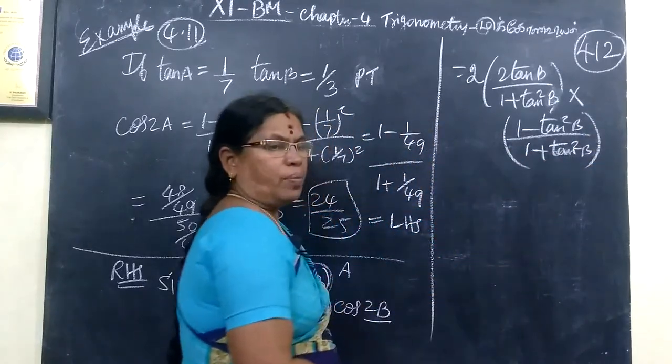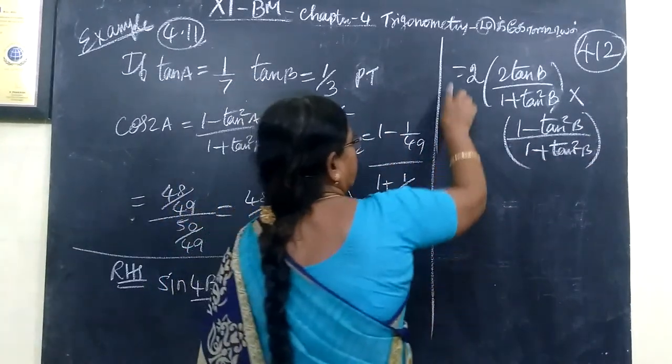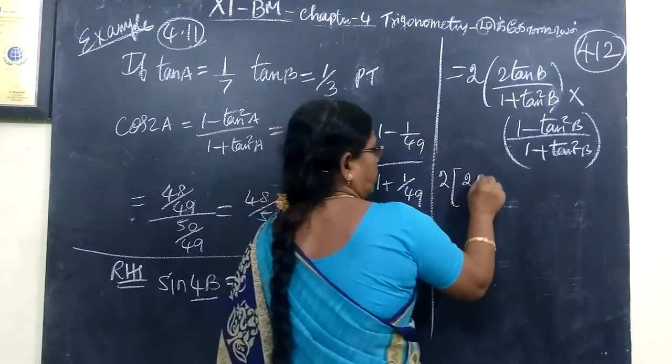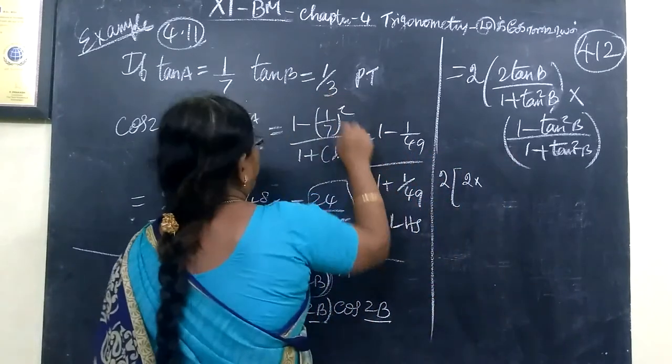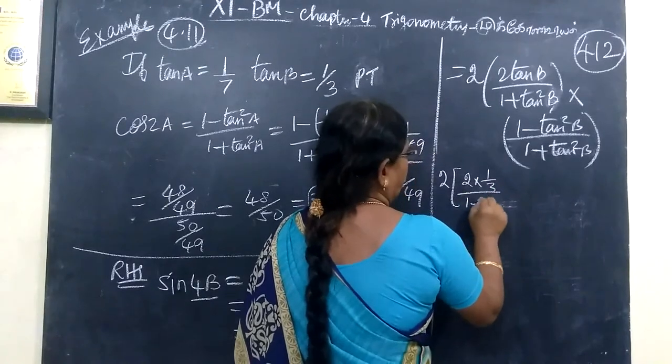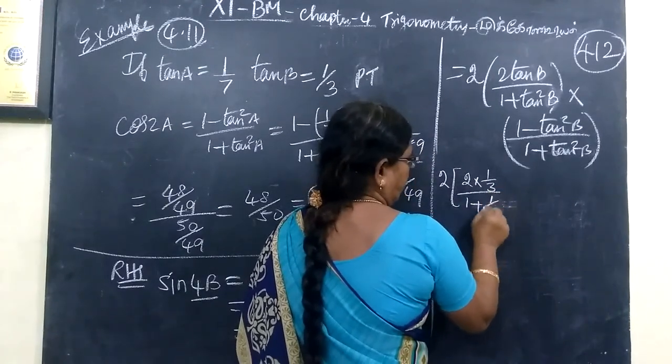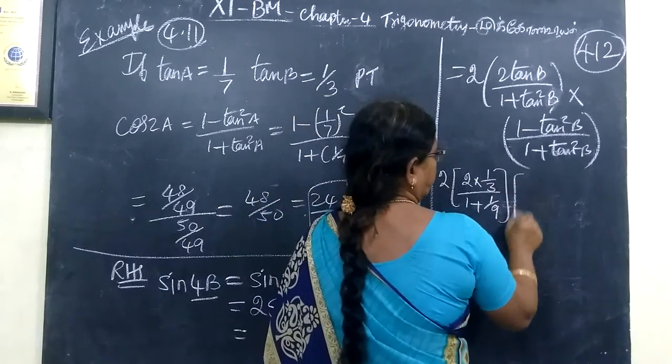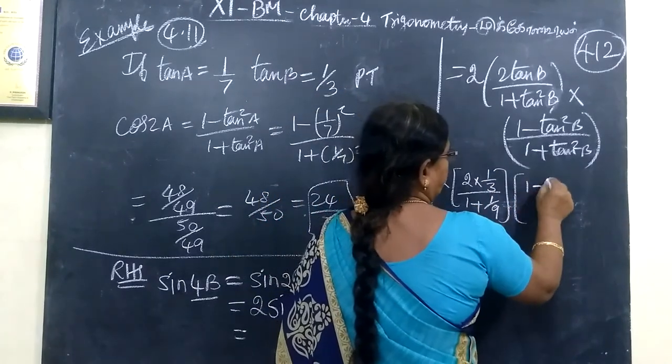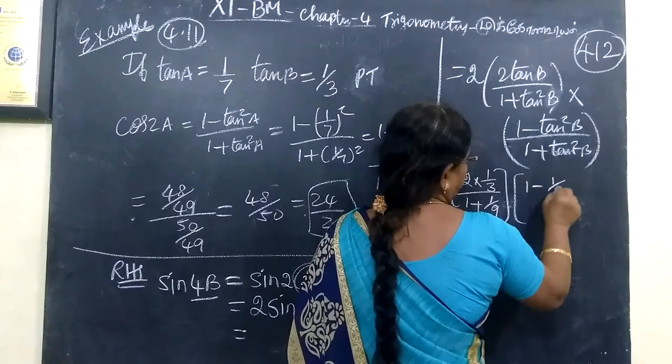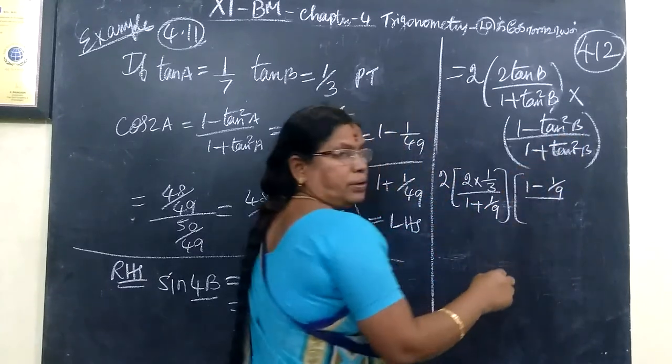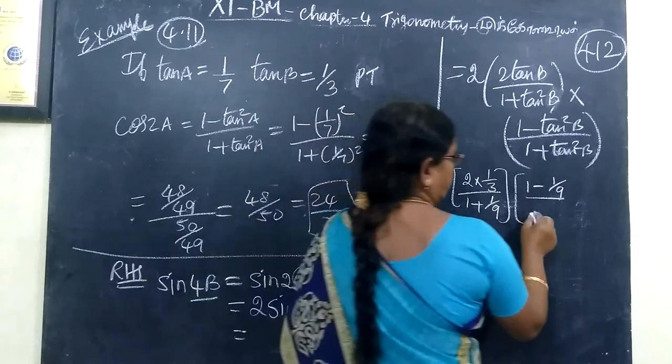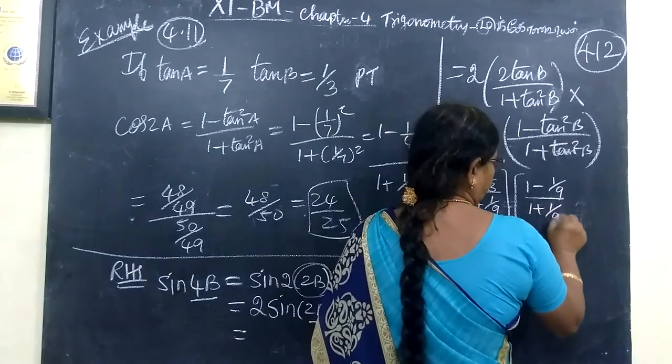Now, using the formula, we are writing this. 2 into 2 tan b. Tan b is 1 by 3, by 1 plus tan square b, that's 1 by 9. Then, 1 minus tan square b. Tan b is 1 by 3, tan square b is 1 by 9. Then, 1 plus 1 by 9.